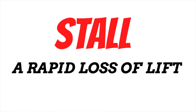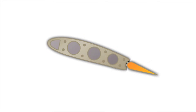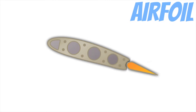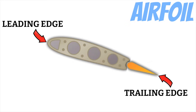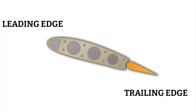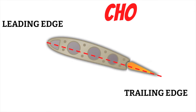To completely understand stalls and why they cause a rapid loss of lift, we need to take a closer look at the cross section of a wing. This is what we call an airfoil. Up here at the front of the airfoil, we call this the leading edge. Then at the very back, we call that the trailing edge. Let's draw an imaginary line from the leading edge of our wing down through the trailing edge — we call this the chord line.